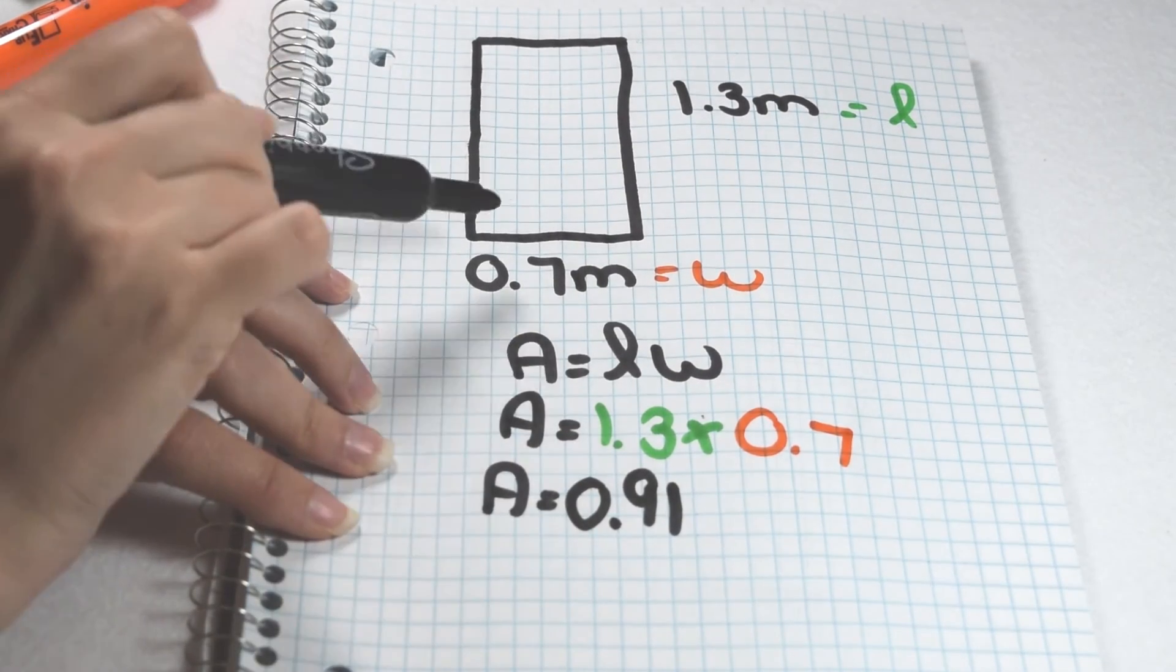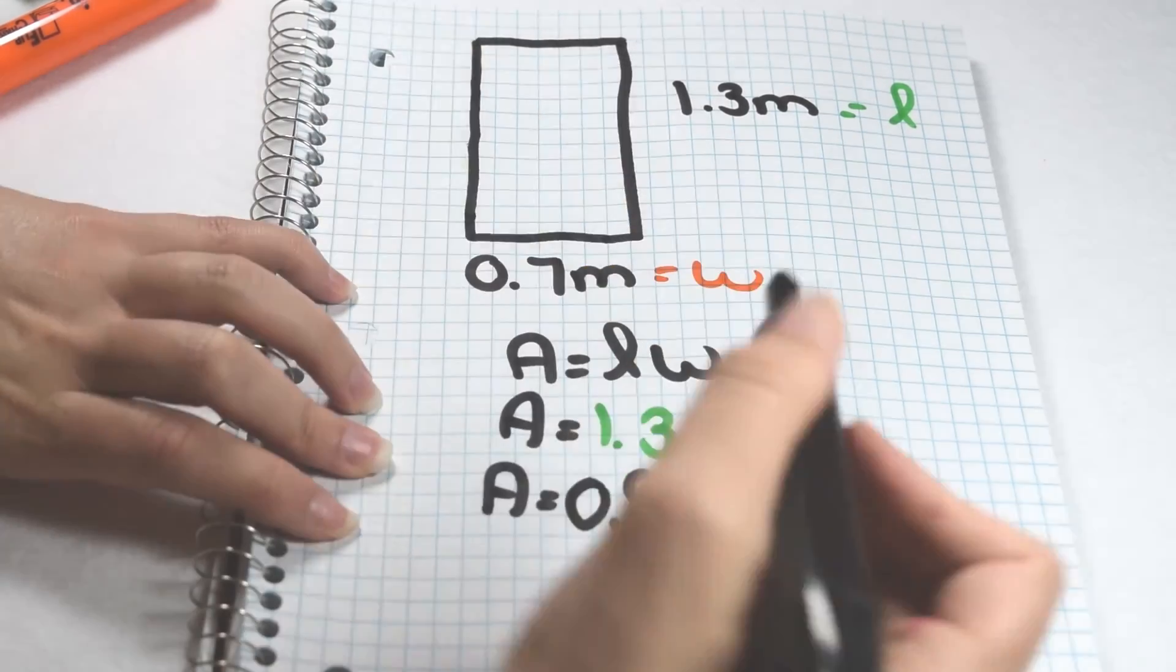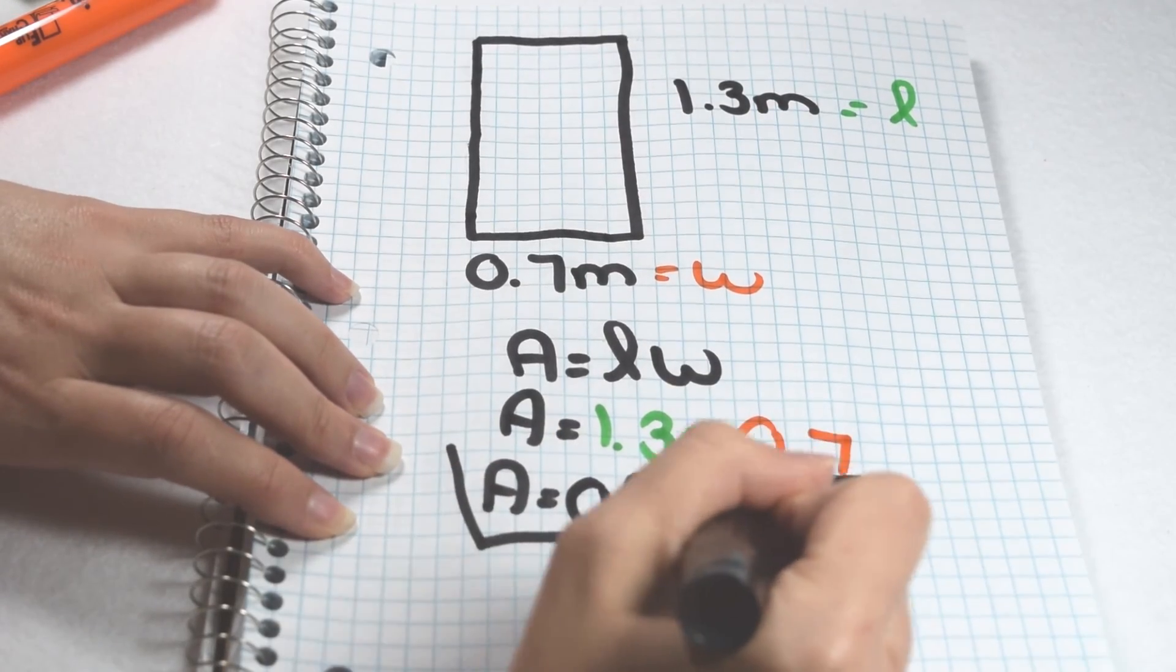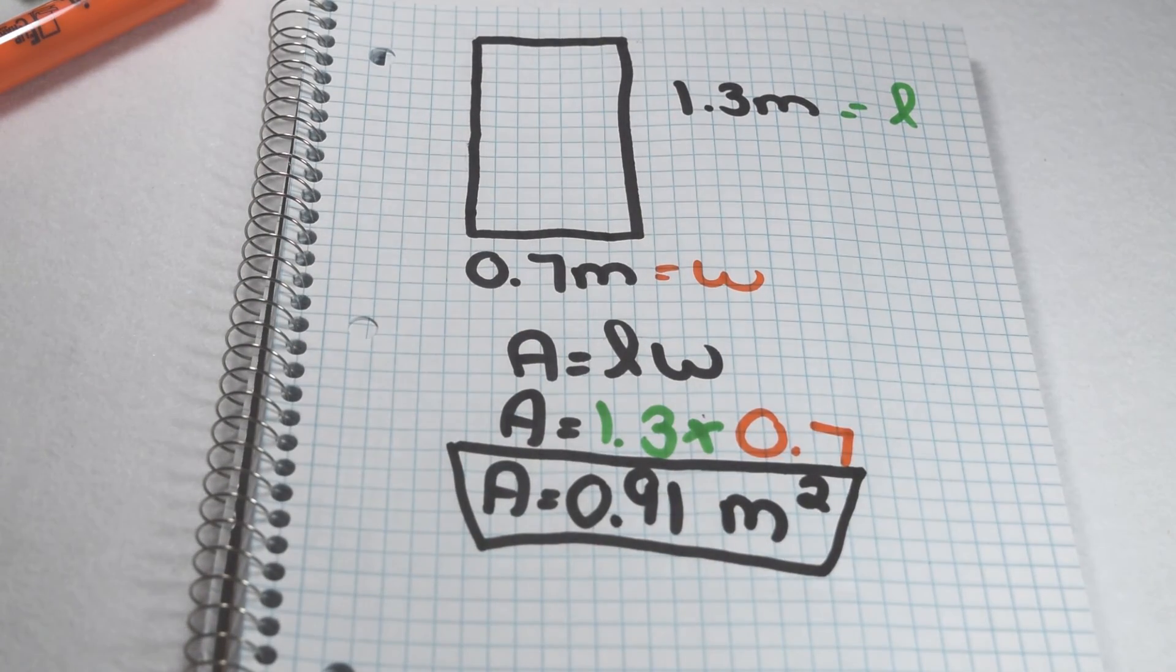Area is always labeled in square units. Since this rectangle is labeled in meters, the 91 hundredths needs to be labeled as square meters. My final answer to area of my rectangle comes out to be 91 hundredths square meters.